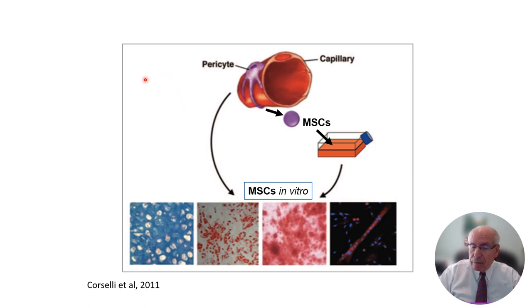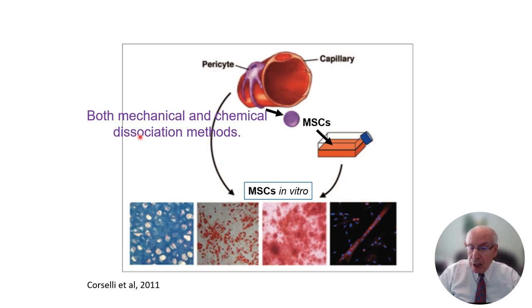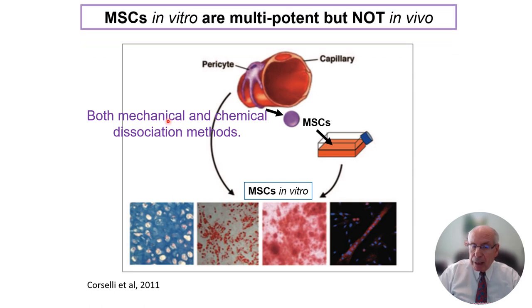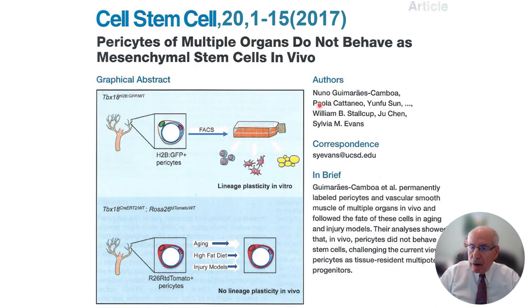We're very clever at getting these pericytes off, putting them into culture under permissive conditions where they'll plate out and divide. We can induce them to differentiate into all these tissues using mechanical or chemical methods to detach the pericyte, and media that supports differentiation into mesenchymal phenotypes. So MSCs are multipotent in culture, but never in vivo.